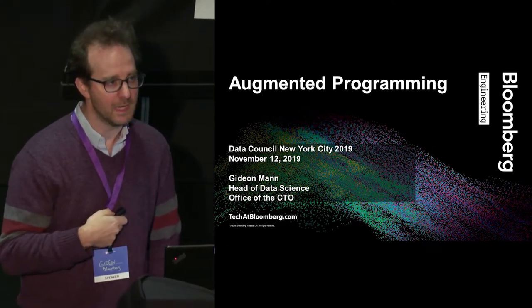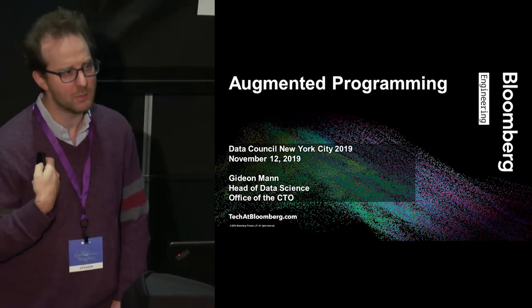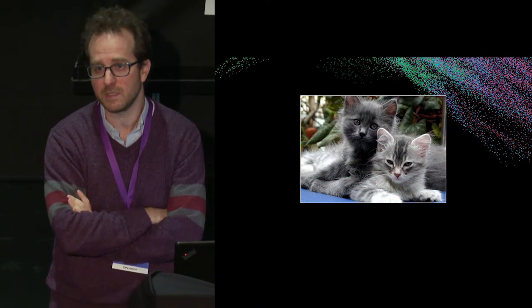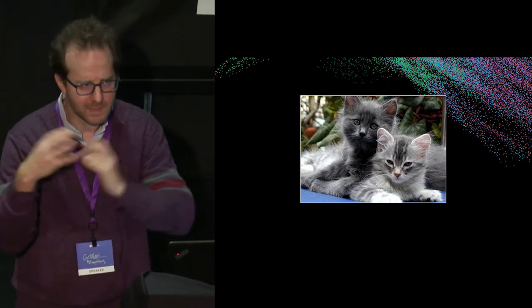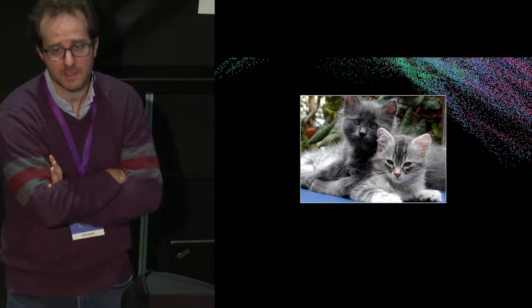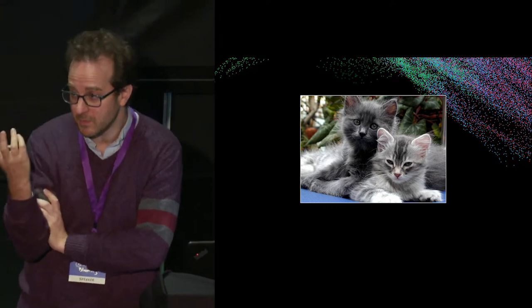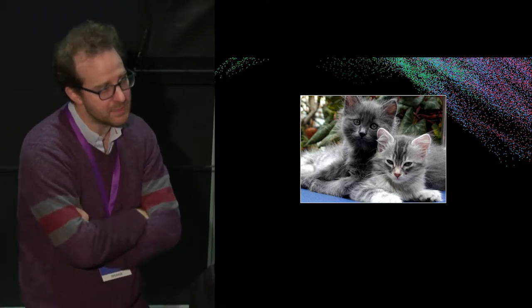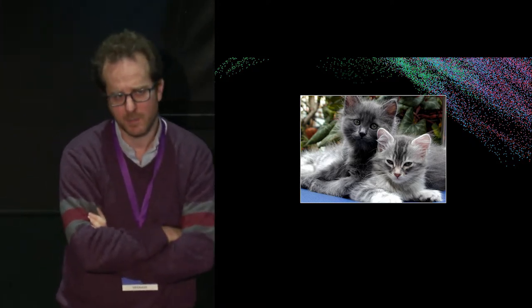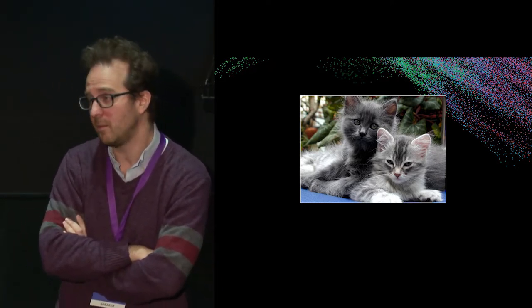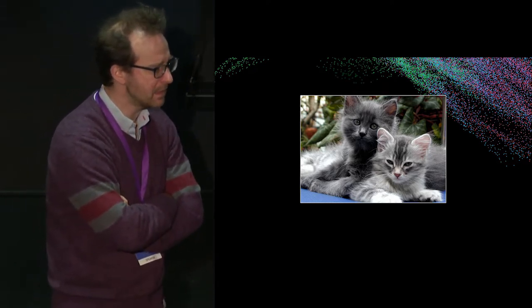Deep learning has had a huge effect. The first area, as I'm sure you all know, was in images and image recognition. One of the most important problems in image recognition, of course, is cat recognition. The success of deep learning techniques on ImageNet in the early 2010s had a huge effect on how people thought about deep learning and machine learning.